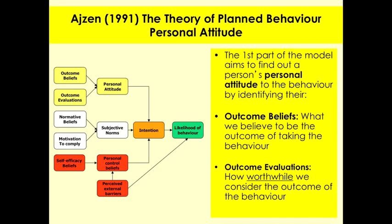The first section is in yellow, and it's trying to find out somebody's personal attitude. The first box is called Outcome Beliefs — what we believe to be the outcome of taking the behaviour. In terms of giving up smoking, somebody's personal attitude might not be correct, but it is what's inside their head. If their outcome belief is that giving up smoking is useful, their personal attitude would be favourable. But it might be: if I give up smoking, it's going to make me really stressed — so their outcome belief is negative.